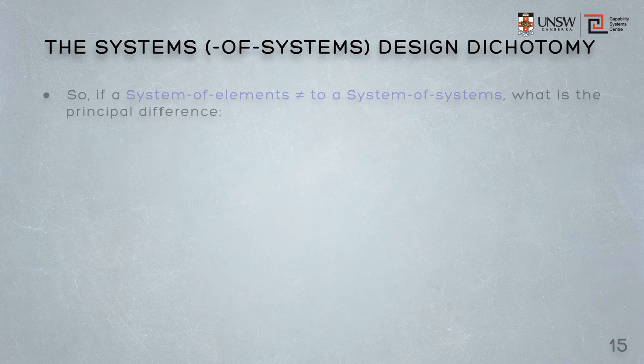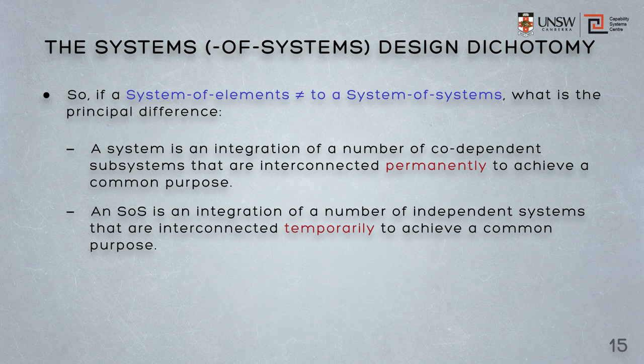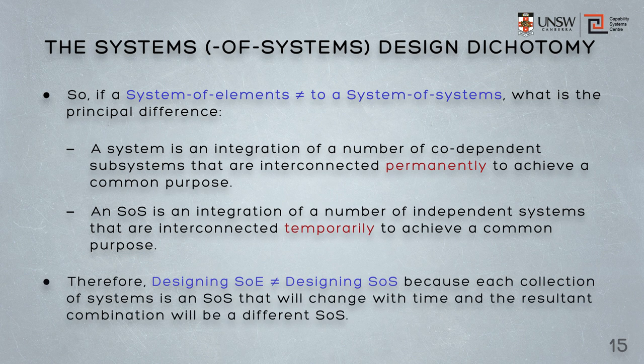So if a system of elements is not the same as a system of systems, what's the principal difference? Well, a system is an integration of a number of codependent subsystems interconnected permanently. A system of systems is an integrated set of a number of independent systems interconnected temporarily. And so a system of systems is not designed the same way as we would design a system of elements, because the collection of those elements is going to be different. In a system, the collection stays static for all time. In a system of systems, the systems will change with time, and the resulting combination will be a different system of systems.